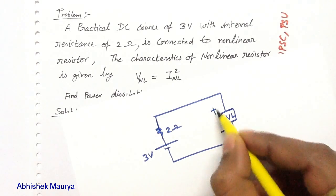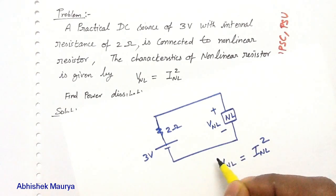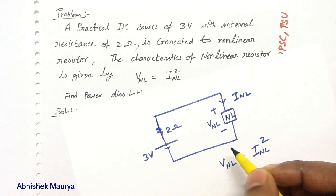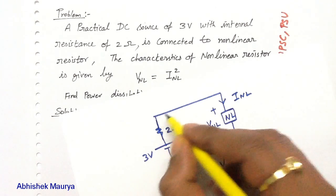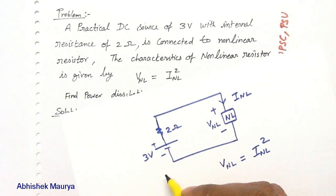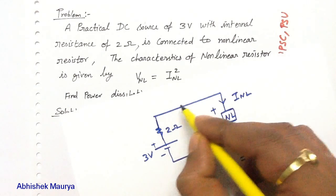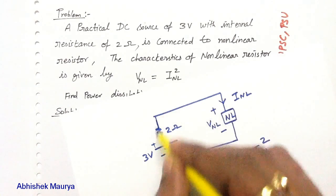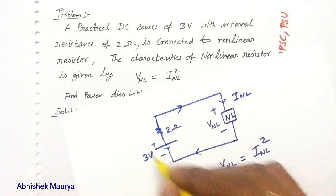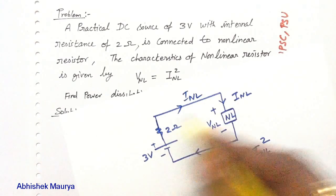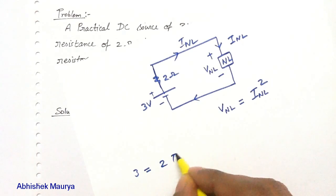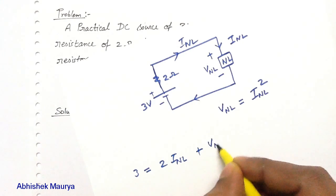Suppose this is the voltage across the non-linear resistor and the current flowing through it is I_NL. Because the battery polarity is in this way, the current will always flow in the clockwise direction. If you apply KVL, you will get: 3 equals 2·I_NL plus V_NL.